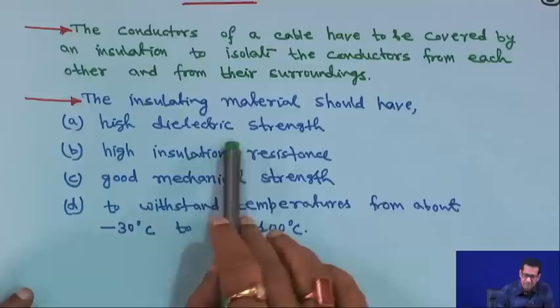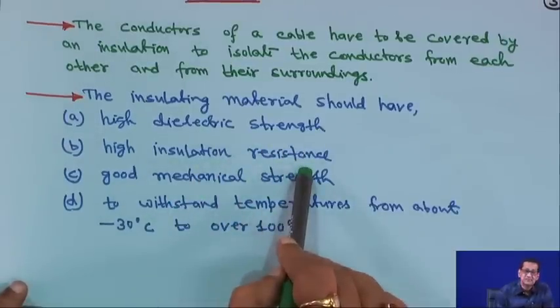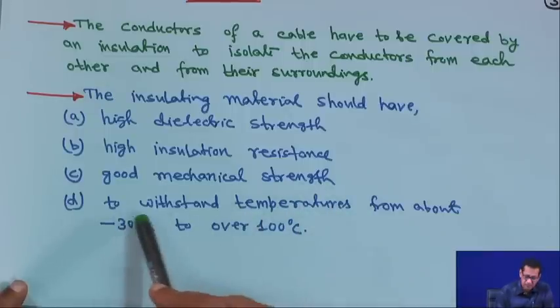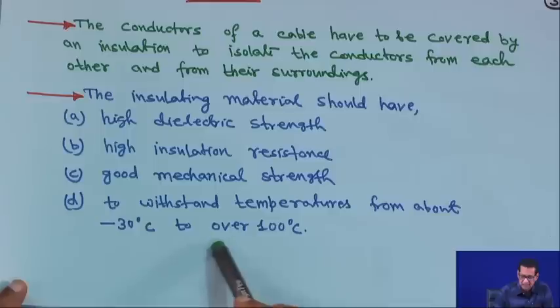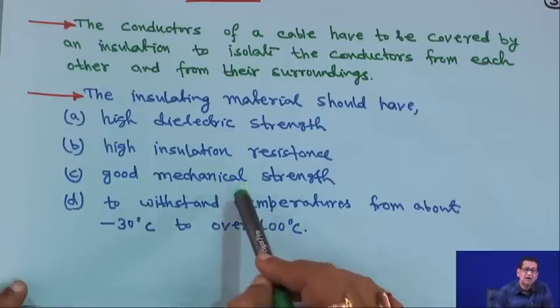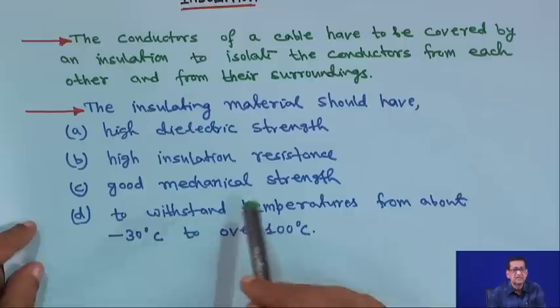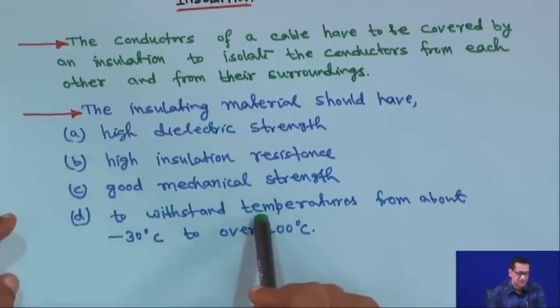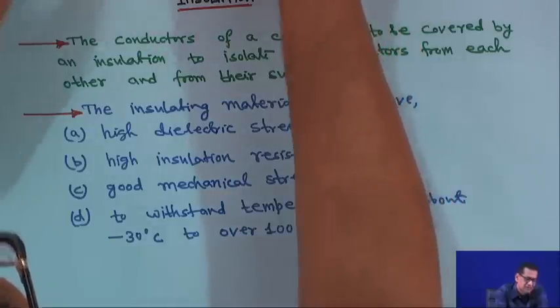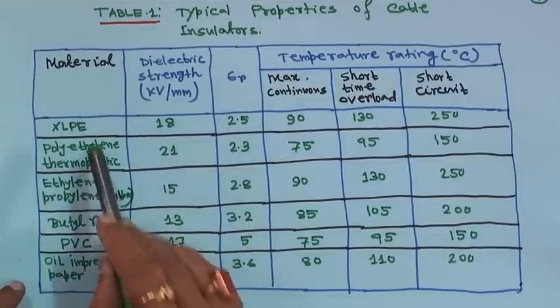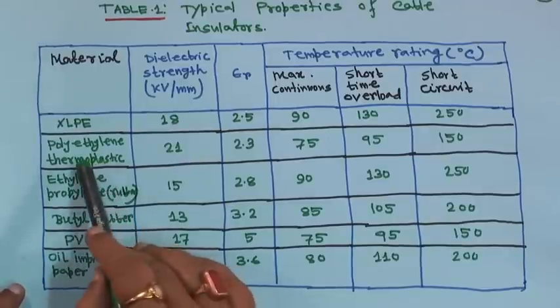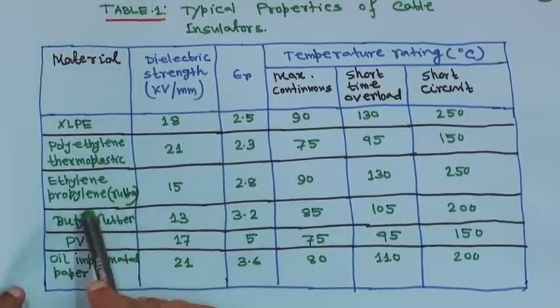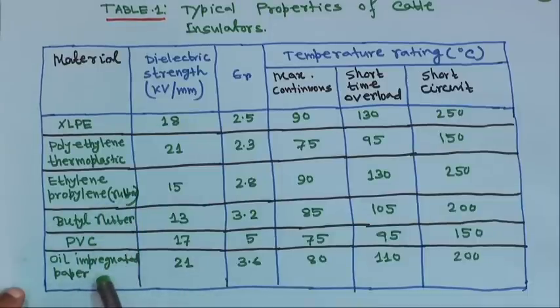The insulating material should have: high dielectric strength, high insulation resistance, good mechanical strength, and the ability to withstand temperatures from about −30°C to over 100°C. Typical cable insulation materials include XLPE, polyethylene thermoplastic, ethylene propylene rubber, butyl rubber, PVC, and oil-impregnated paper.